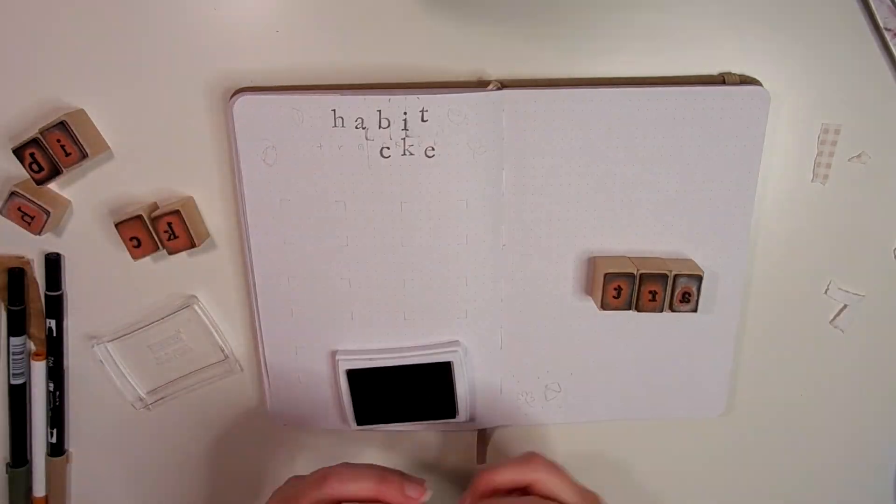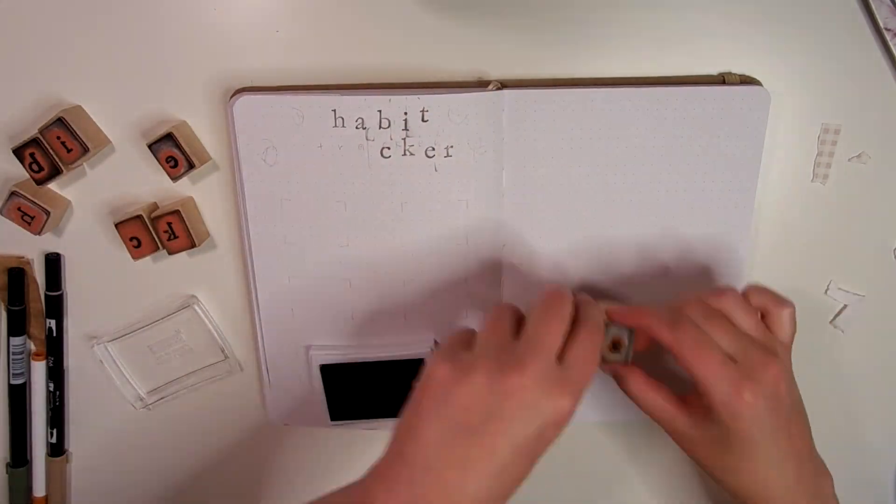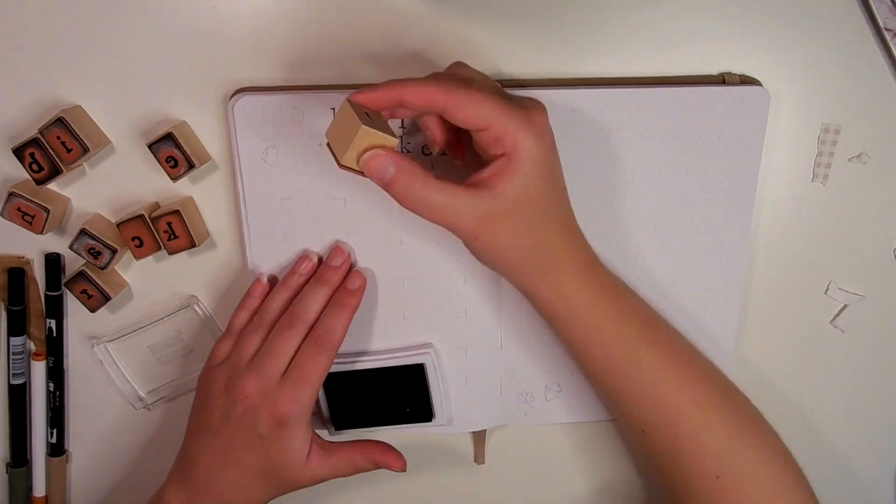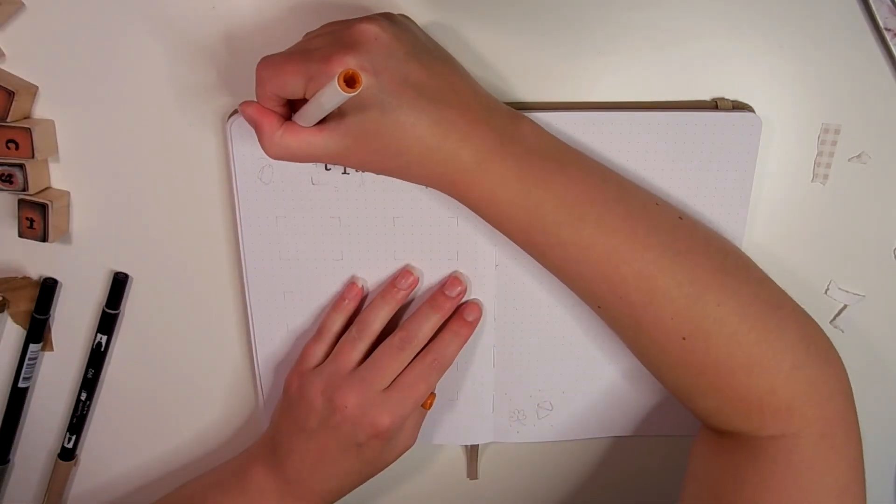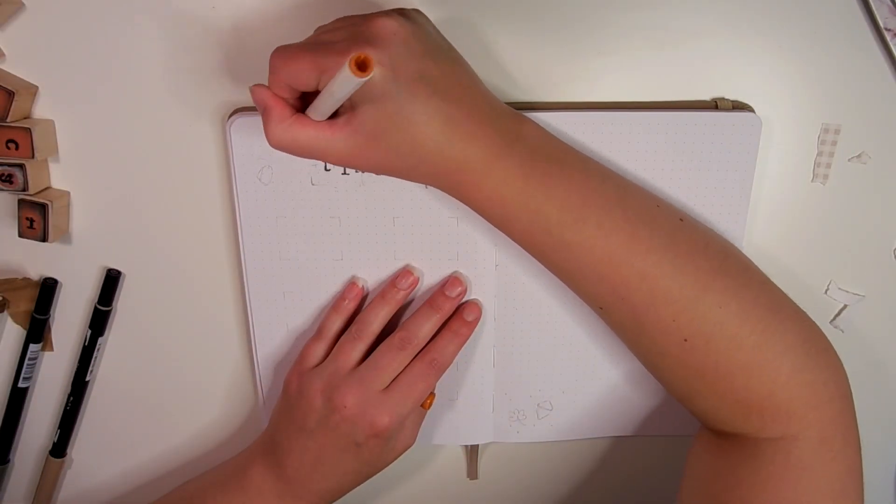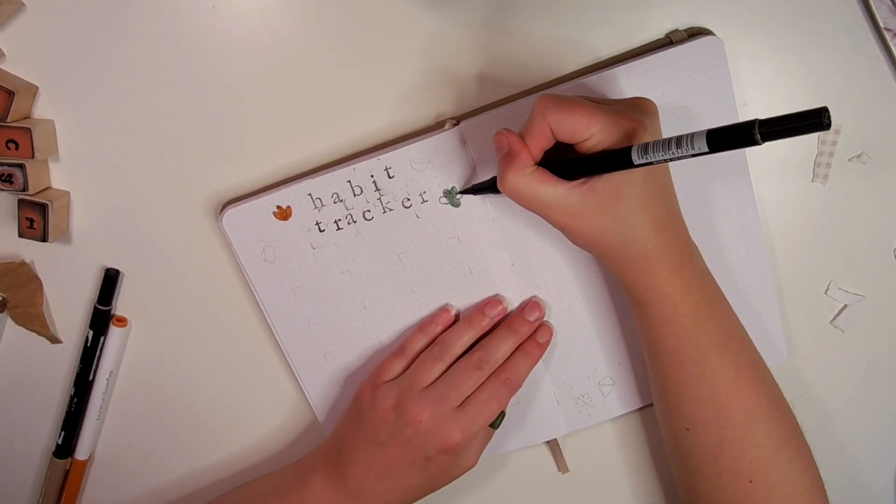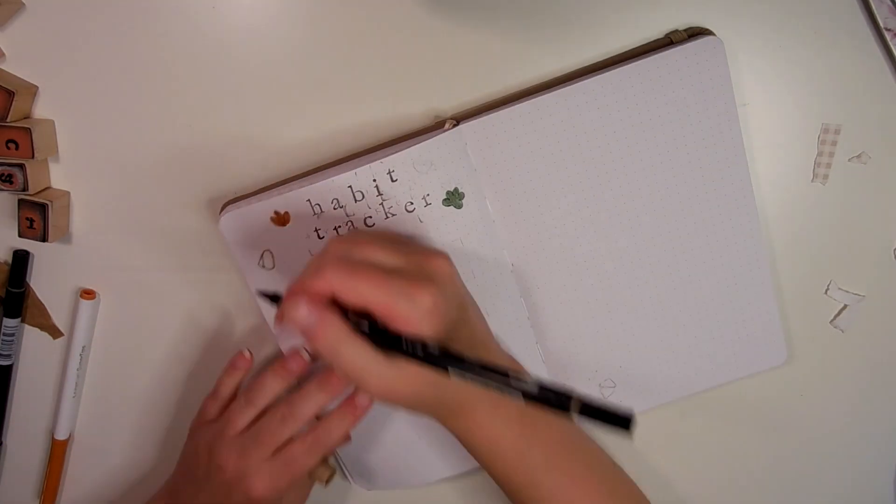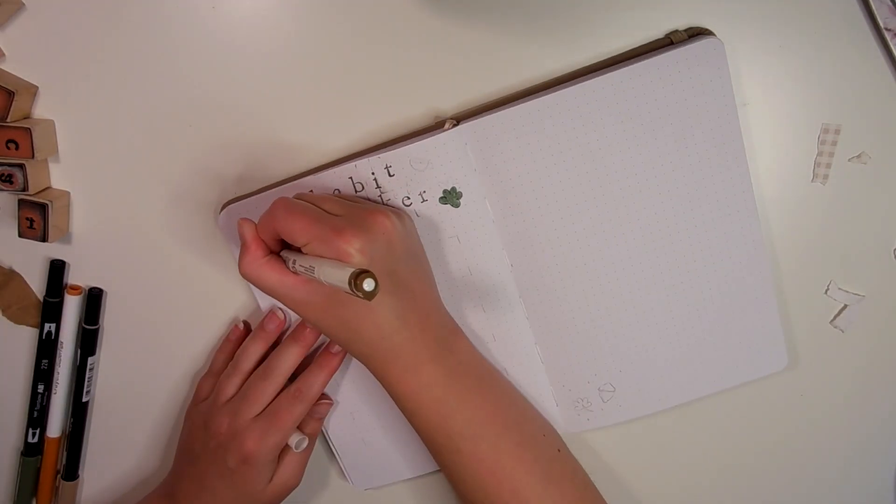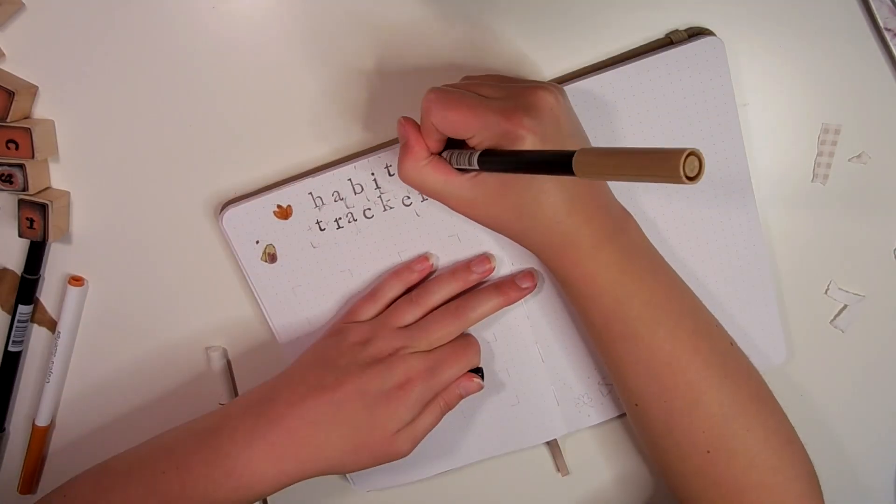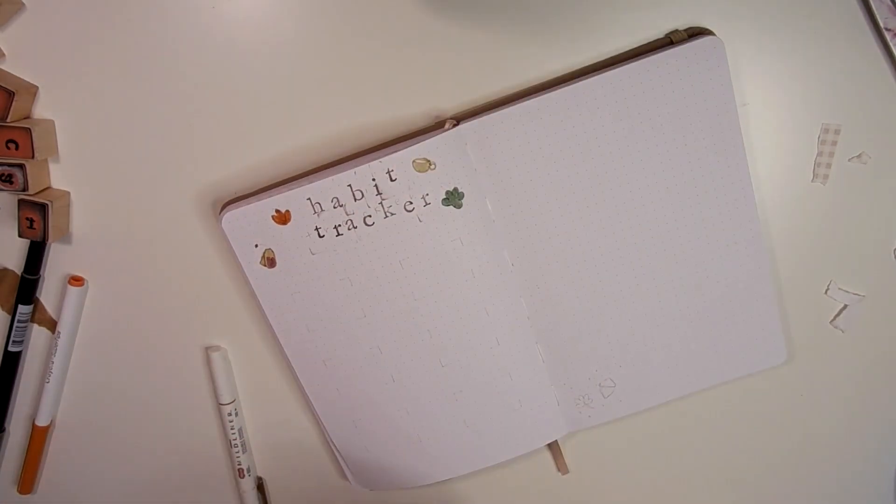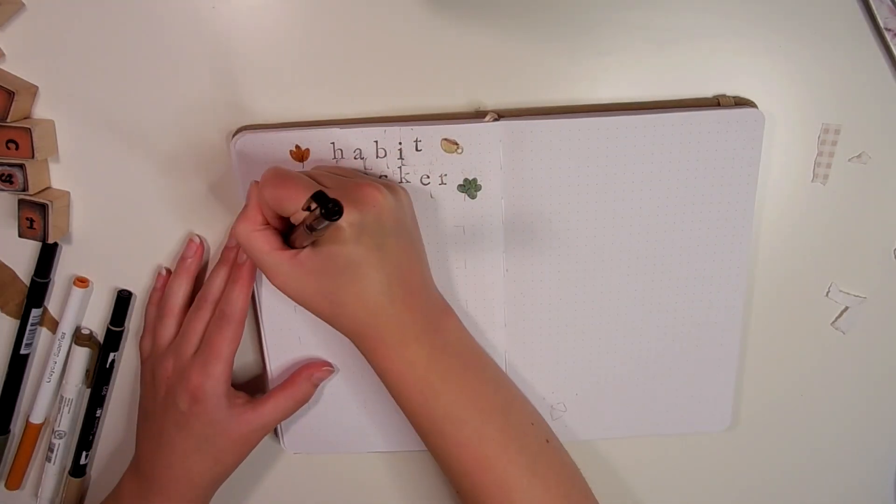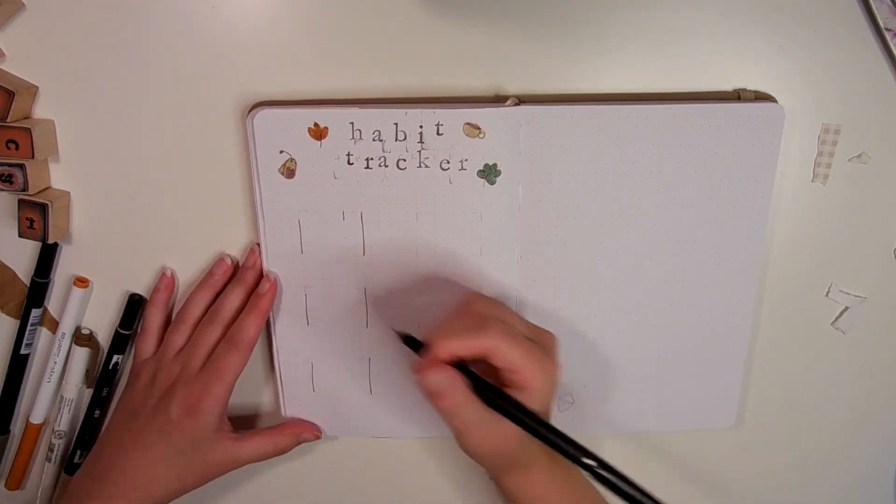For the six individual habits I'm going to be tracking this month, I just create six little calendars. I use the black marker to outline a little calendar for each habit, and then when I do those habits throughout the month I will fill it in for that day. I'm keeping this page pretty simple so it can be functional. This is exactly how I set up my habit tracker pretty much every month.